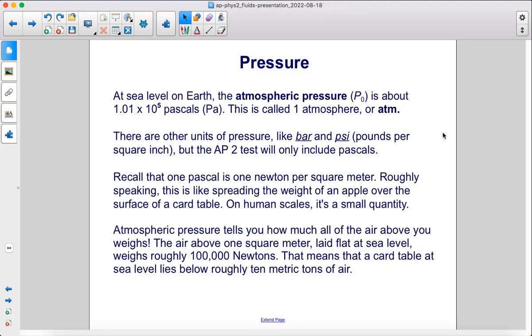At sea level on Earth, the atmospheric pressure, P0, is about 1.01 times 10 to the 5th pascals. This is called 1 atmosphere, or ATM. There are other units of pressure, like bar and psi, but the AP2 test will only include pascals.